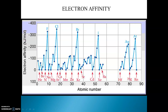For second period elements, lithium has some electron affinity but beryllium is zero. It increases again through boron and carbon, but for nitrogen it is zero. Then oxygen has some electron affinity, and the highest in the second period is fluorine. Again, neon has zero electron affinity. Similarly for third period elements, halogens have the highest electron affinity in their respective periods.